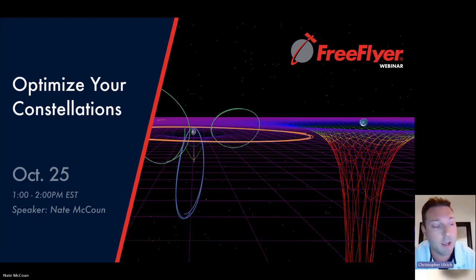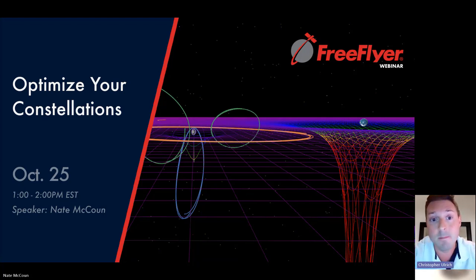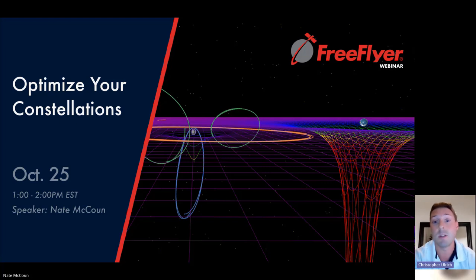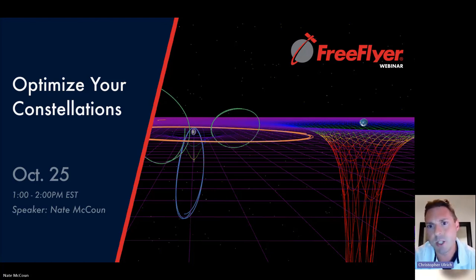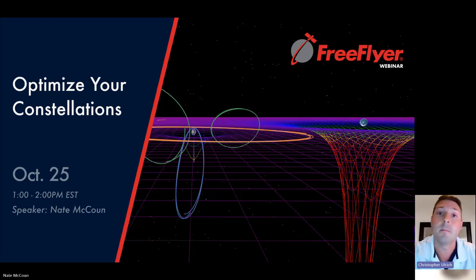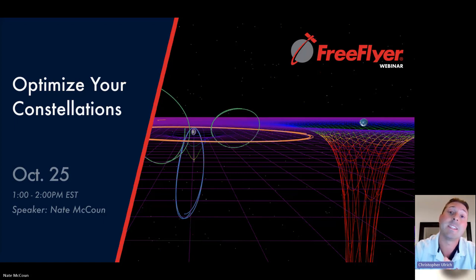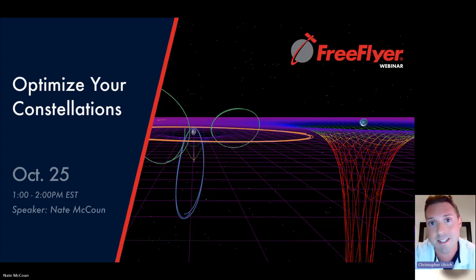We've got an exciting webinar today focusing on Constellation Optimization using FreeFlyer, presented by Nate McCown, FreeFlyer Support Manager and Systems Engineer. Nate is an alumnus of Alabama State University, where he got his start using FreeFlyer in the Astrodynamics and Space Research Laboratory (ASRL), researching constellation design, remote sensing, station keeping, and collision avoidance under Dr. Rohan Saad. He joined the FreeFlyer team as an intern in summer 2018 and has worked full-time as a space systems engineer with AI Solutions ever since, supporting technical support, FreeFlyer releases, training, and more.